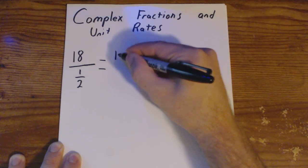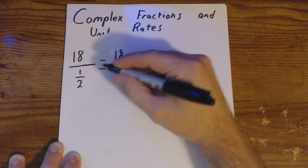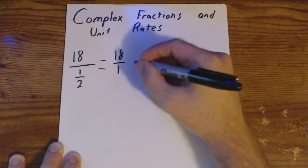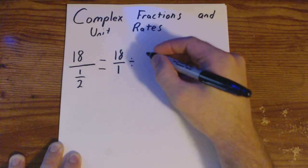So on top, we have 18, which we can represent as a fraction in itself by putting it over 1. This big line represents division. So let's divide by what's on the bottom, which is 1 half.